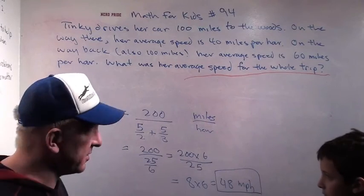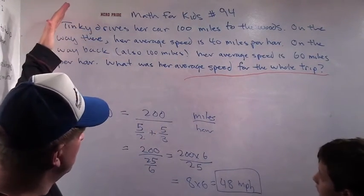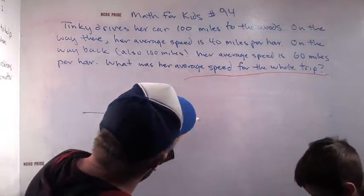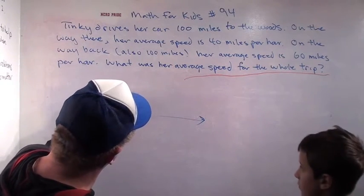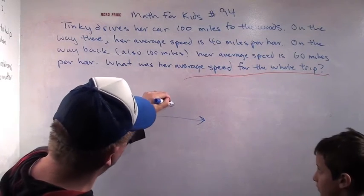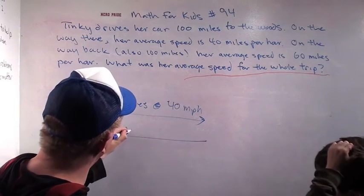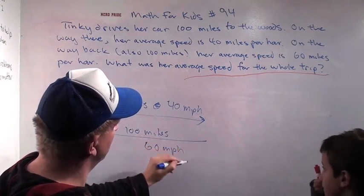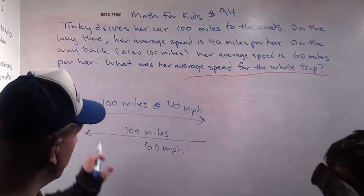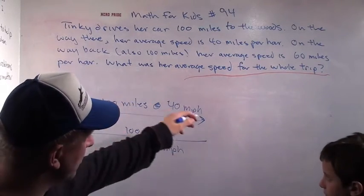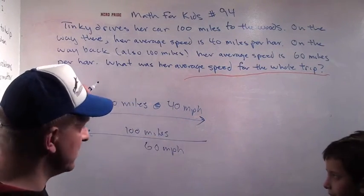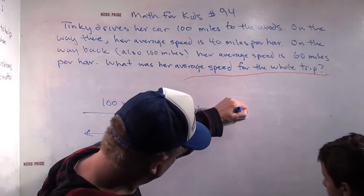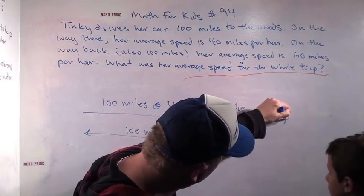Let's review this for just a second. She went 100 miles one way at 40 miles per hour. Then she came 100 miles back at 60 miles per hour. So for the whole trip, she went 200 miles. We figured out the total time, and so the average speed was the total distance divided by the total time. And we got the average speed was 48 miles per hour.